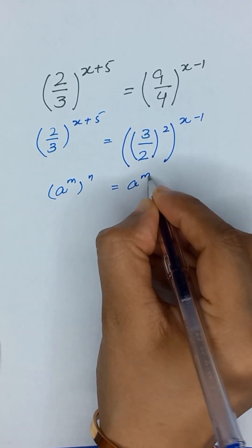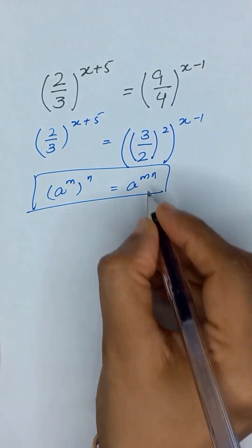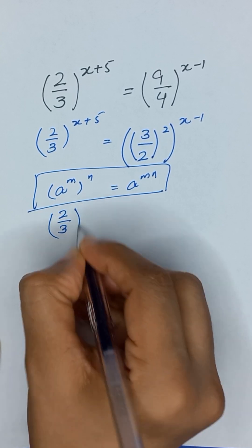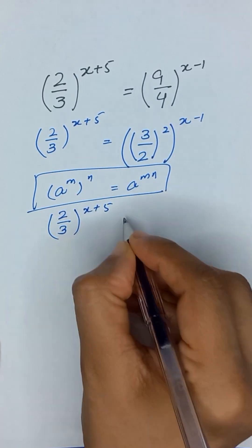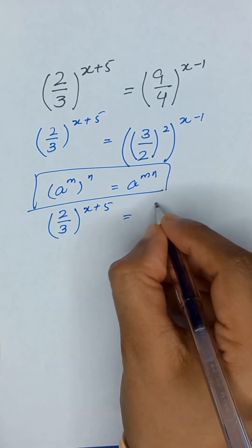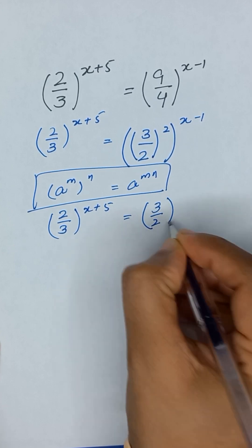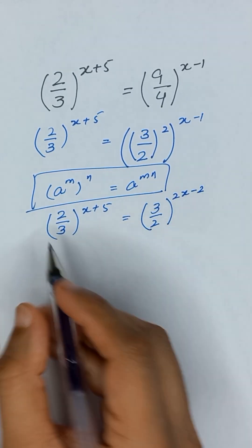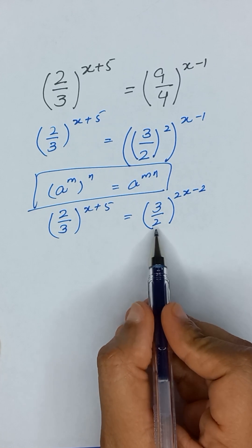Applying the exponential rule, it will become 2 divided by 3 to the power x plus 5 is equal to 3 divided by 2 to the power 2x minus 2.